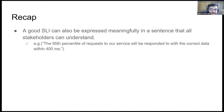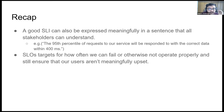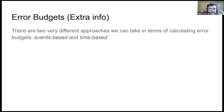A good SLI can be expressed meaningfully in a single sentence that all stakeholders understand — for example, '95th percentile of our requests will be responded to within 400 milliseconds.' SLOs set a target for how often we can fail and still ensure our users are not meaningfully upset. There are two very different approaches to calculating error budgets: event-based and time-based. The right approach depends on the fidelity of data available, how your systems work, and even personal preferences.